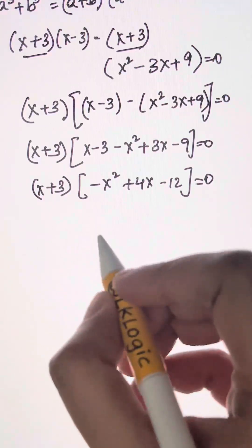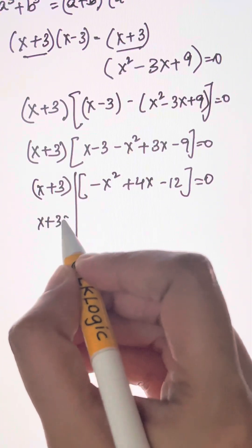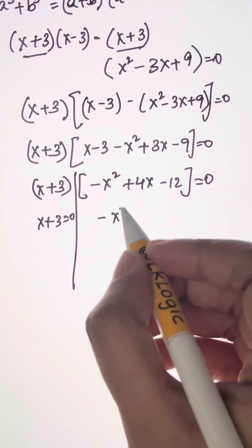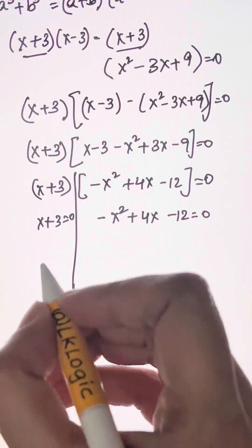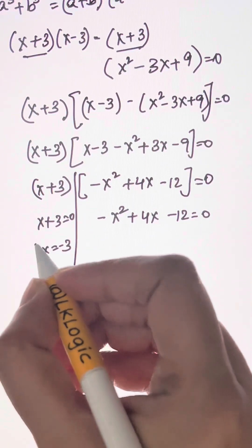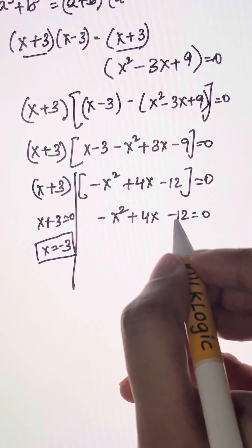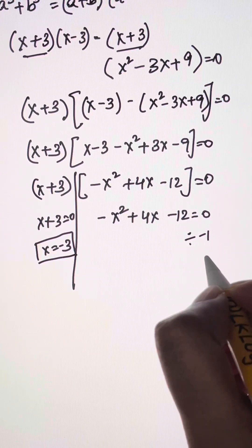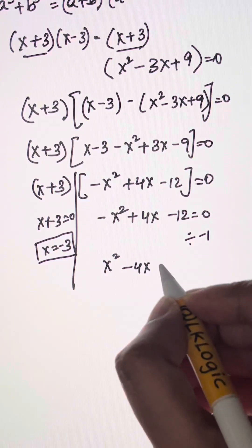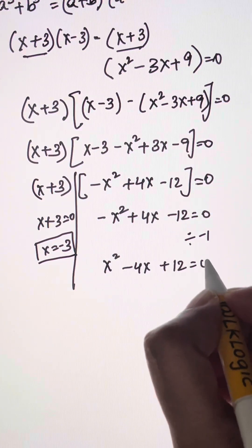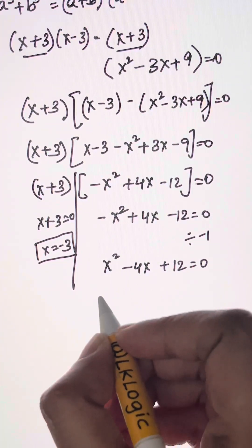I have two solutions here. The first one: x plus 3 equals 0, giving x equals negative 3 — that's one real solution. And here I have negative x squared plus 4x minus 12 equals 0. Dividing both sides by negative 1, I get x squared minus 4x plus 12 equals 0. Let us solve using the quadratic formula for the values of x.